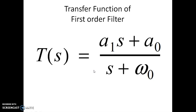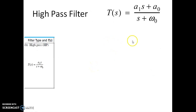We will see the transfer function of a first order filter, having poles and zeros located at omega naught and a-naught by a1. For a high pass filter, a-naught happens to be 0, and a1 is a non-zero quantity, which results in a transfer function given by a1·s divided by s plus omega-naught.